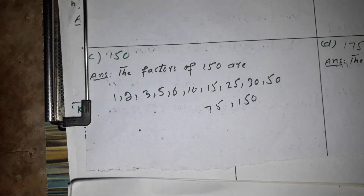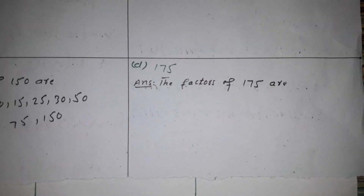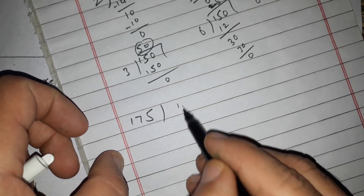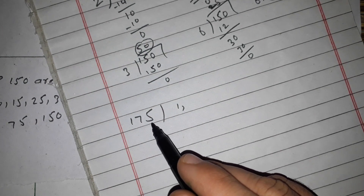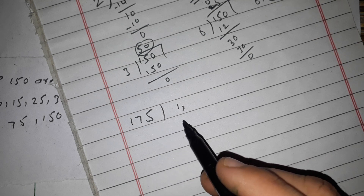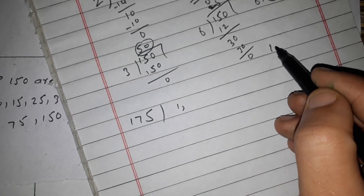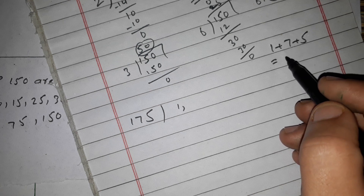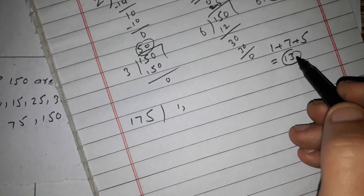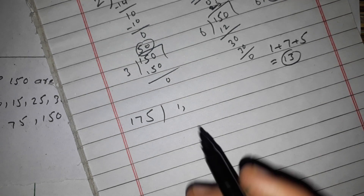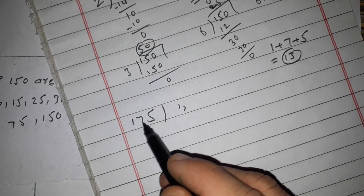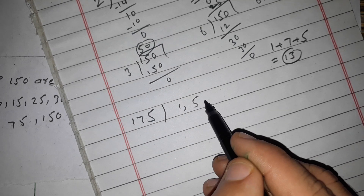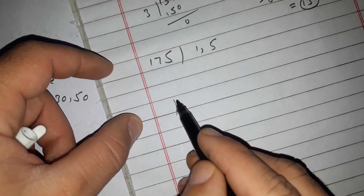Now finding the factors of 175. The first factor is 1. To check divisibility by 2: the last digit is 5, so 2 does not divide 175. Checking by 3: 1 plus 7 plus 5 equals 13, not divisible by 3. Checking by 5: 175 ends in 5, so 5 divides 175, giving 35.